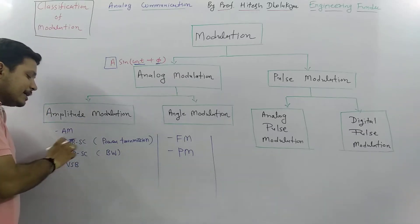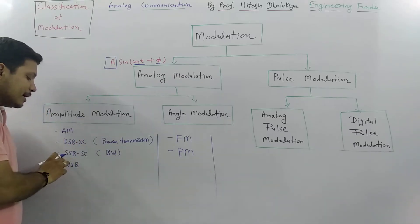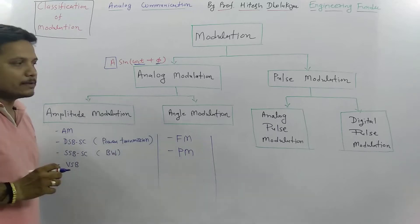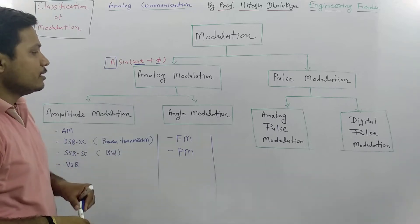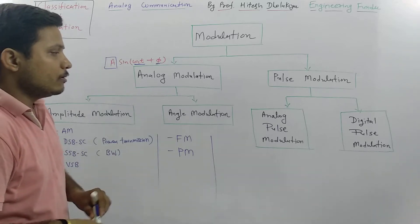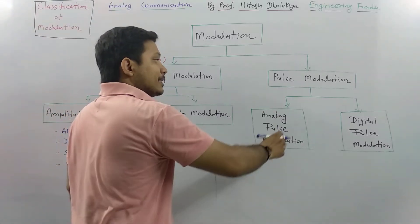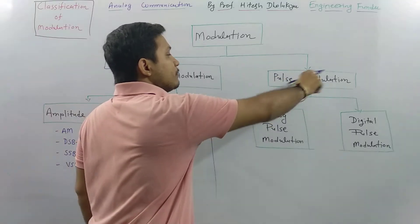In amplitude modulation there are four different techniques that I will be explaining in this communication system engineering playlist: AM, DSBSC, SSBSC, and vestigial sideband.